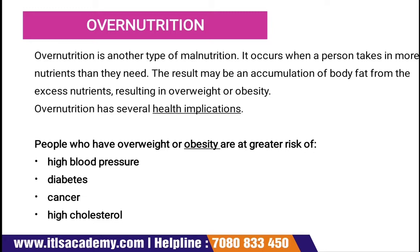Then comes over-nutrition. Over-nutrition is another type of malnutrition. It occurs when a person takes in more nutrients than they need. The result may be an accumulation of body fat from excess nutrients, resulting in overweight or obesity. Over-nutrition has several health implications. People who are overweight or obese are at higher risk of high blood pressure, diabetes, cancer, and high cholesterol.